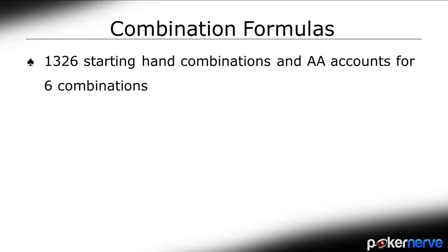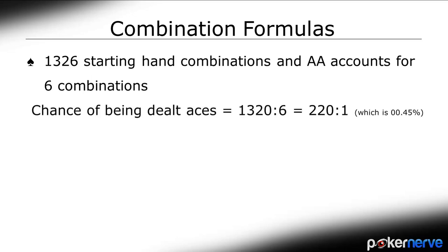So 6 combinations are pairs of Aces, leaving 1,320 that aren't Aces. So using odds, we can say 1,320 to 6 is the chance of getting Aces, or around 220 to 1, which is a little less than half a percent.